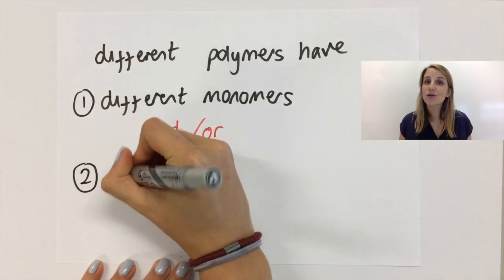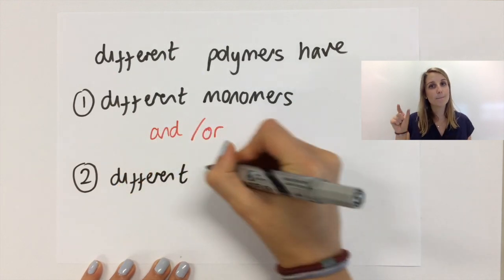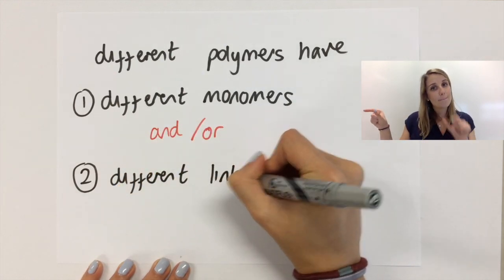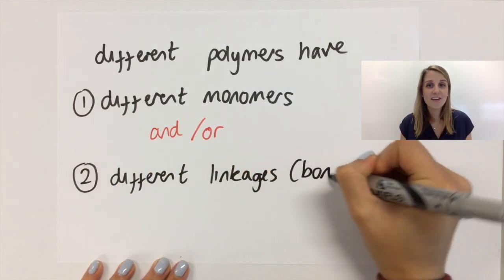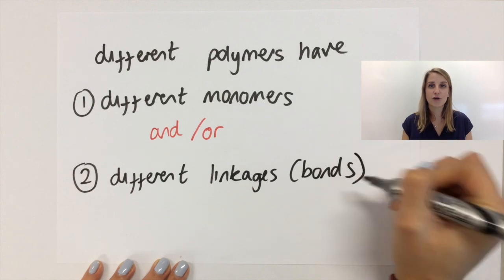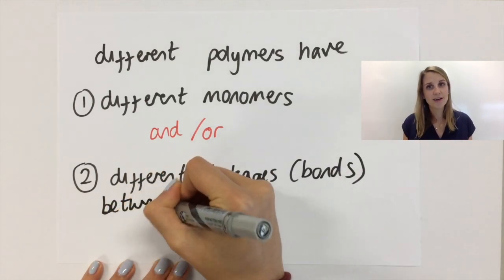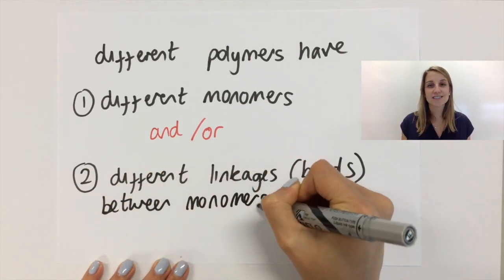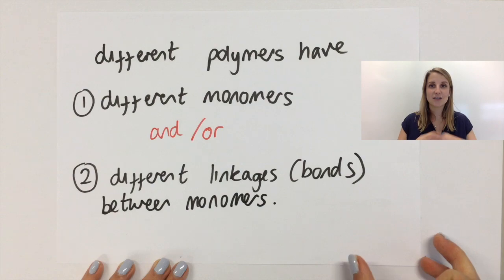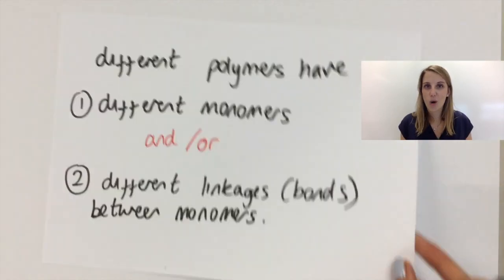You can also change how the monomers bind to each other, and if they make different bonds with the next monomer, that can also adjust the properties of the polymer as a whole.